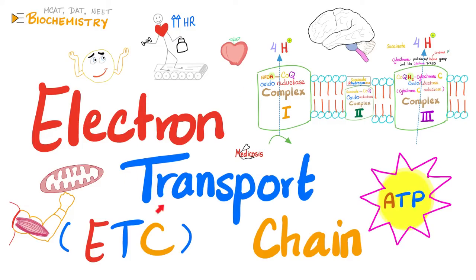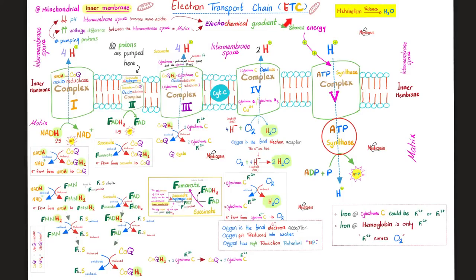By the way, to learn more about the ETC, I have a video titled Electron Transport Chain, and you'll find it in my biochemistry playlist. Two words: oxidative phosphorylation. Where is the oxidative part? Here is the oxygen for you at Complex 4. Where is the phosphorylation part? Phosphorylation of ADP so that it becomes ATP.